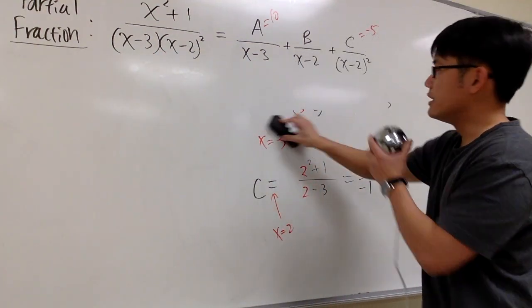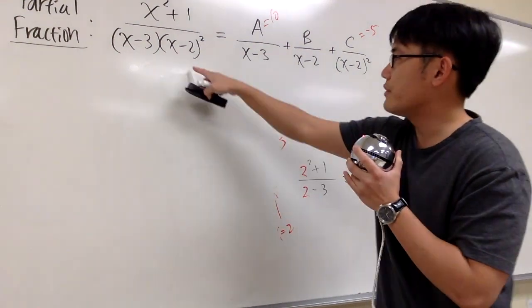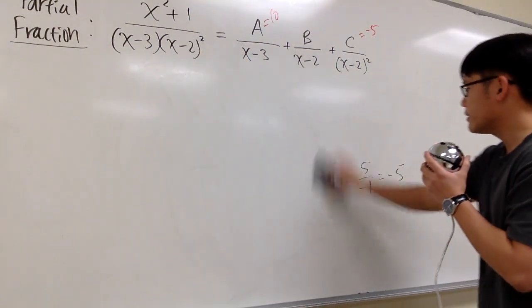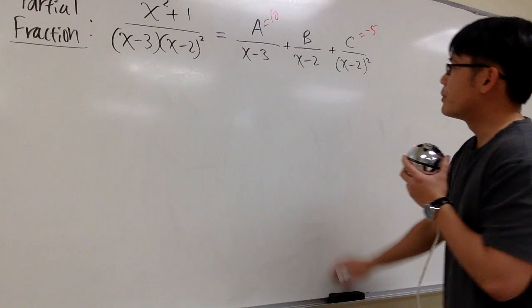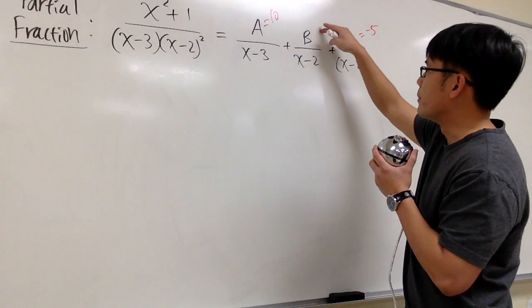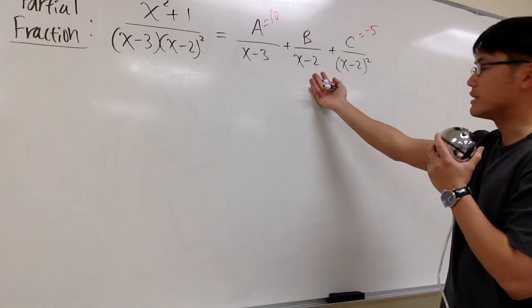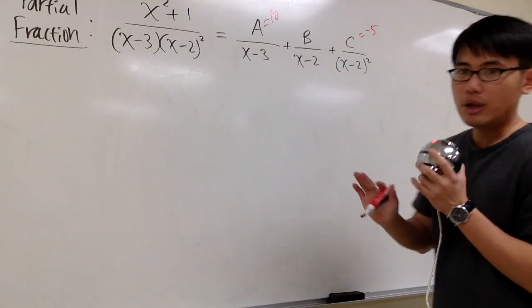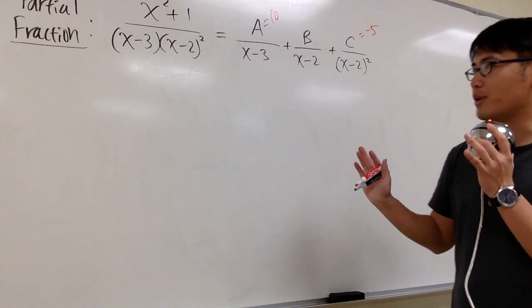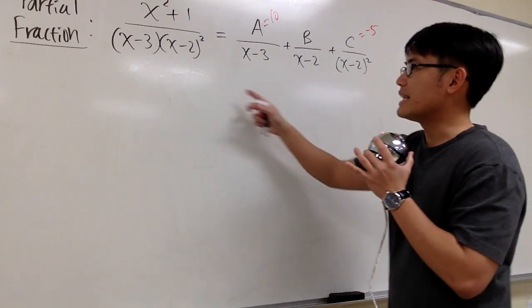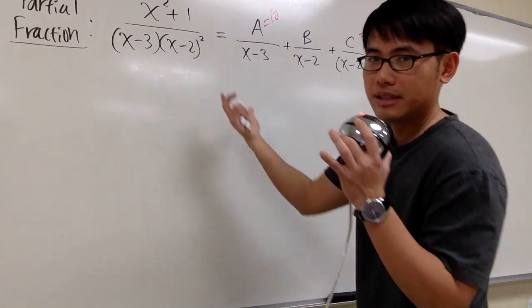And then we talk about this is how the setup will be when you have a repeated linear factor. Remember, all the power has to be present, so for the B we have x minus 2 to the first power. But now the question is, how can we solve for B? See, I used all the cover-up methods already. This is not exactly the same as that because it's not enough power.